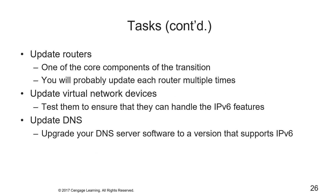Updating your routers will be one of the core components of the transition. You will probably update each router multiple times as you initially enable IPv6 routing and later add and remove various tunnels. Before each step, take care not to exceed the CPU's capacity, memory, or throughput on those boxes. Remember that some processes handled in hardware ASICs for IPv4 — such as processing access lists — might be handled in software for v6, which could substantially increase CPU load and dramatically reduce performance.